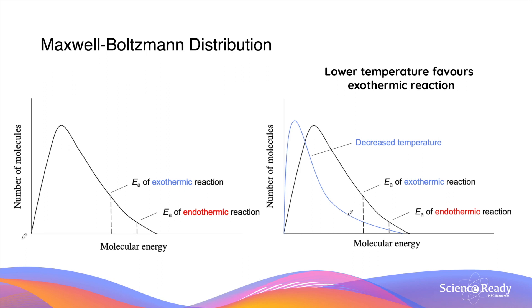Conversely, a decrease in temperature also affects the endothermic reaction more. A decrease in temperature has the opposite effect to an increase: it decreases the rate of both exothermic and endothermic reactions by reducing the proportion of molecules with sufficient energy to react — that is, the area under the curve to the right of the activation energies becomes smaller. As discussed, this affects the endothermic reaction more, meaning the rate of the endothermic reaction decreases more than the exothermic reaction.